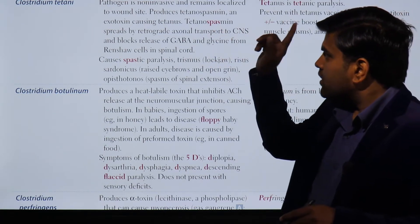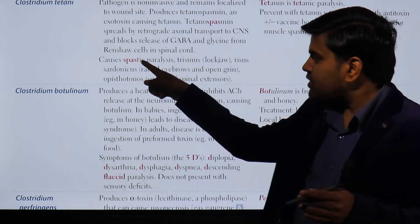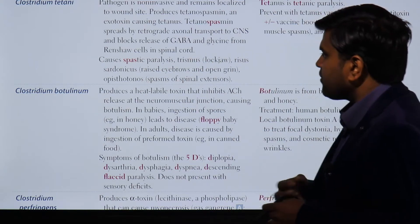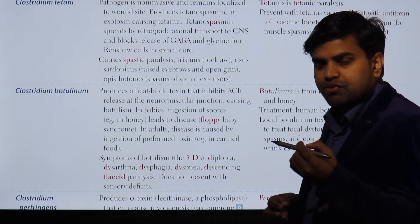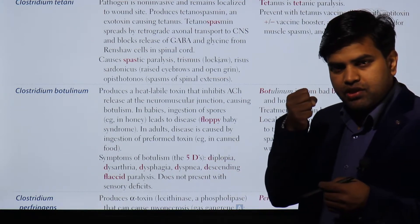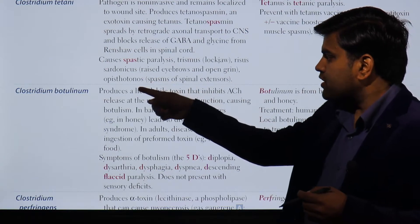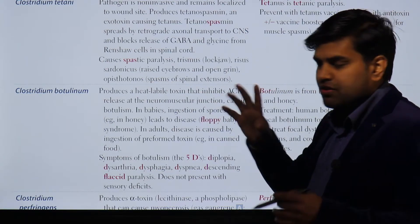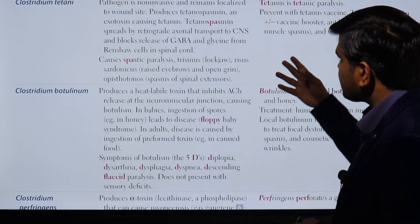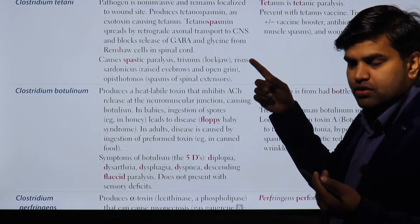Clostridium tetani produces an exotoxin called tetanospasmin, which is a protease that cleaves the SNARE complex and blocks GABA and glycine, causing spastic paralysis with increased muscle tone. This leads to facial muscle contraction called risus sardonicus, back extension muscle contraction called opisthotonos, and lockjaw.